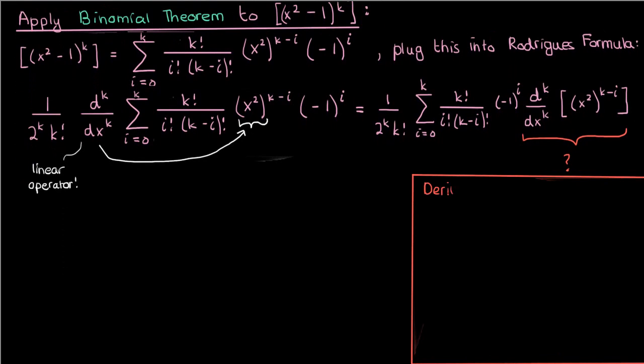In fact I'm going to derive a fairly general equation for the nth derivative of x to the power r, where r isn't necessarily equal to n. And then I'll apply that equation to the kth derivative of x squared to the power k minus i.